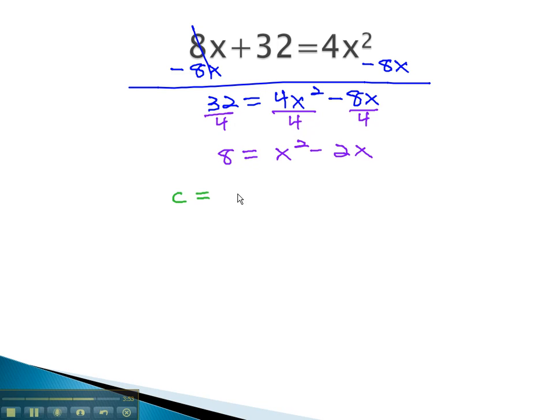To find the c that completes the square, we take 1 half of b, or negative 2, and square it. Half of negative 2 is negative 1, squared is 1. We will add this to both sides.